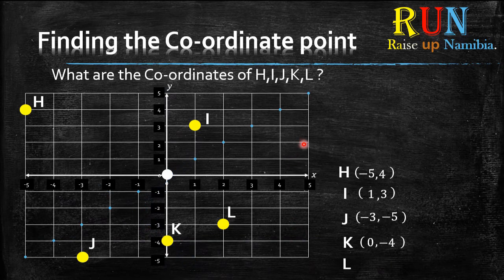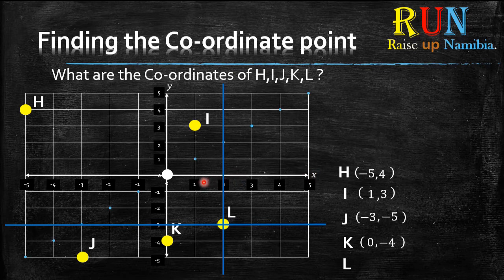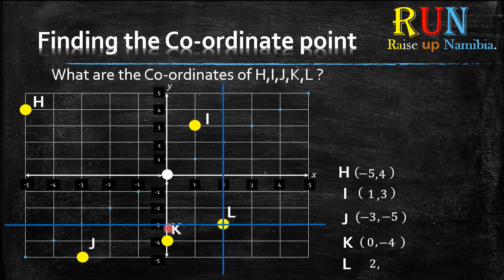We go to L. Draw your cross lines and start again on the x-axis. The blue line crosses the x-axis at positive 2. Write down positive 2, put a comma, then go to the y-axis — where does the other blue line cross? It's at negative 3. Write down negative 3, put it into brackets. That's your final answer for L — easy, isn't it?